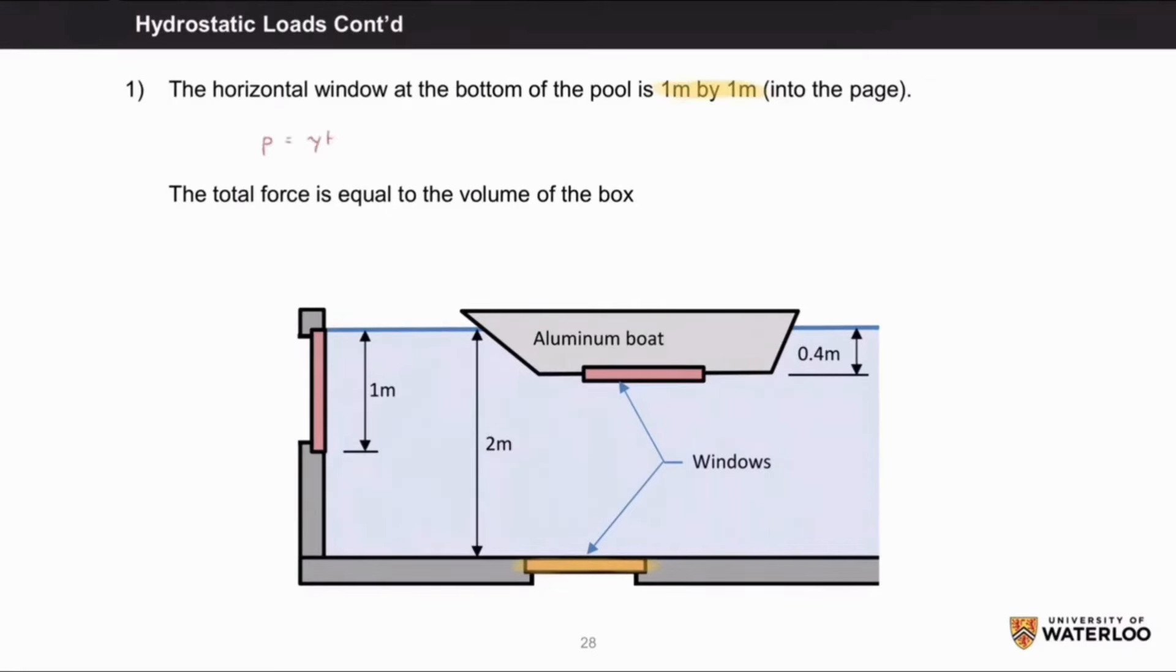The pressure is gamma times h, which is 9.81 kilonewtons per meter cubed times the 2 meter depth of the pool. This gives us a pressure of 19.6 kilopascals.